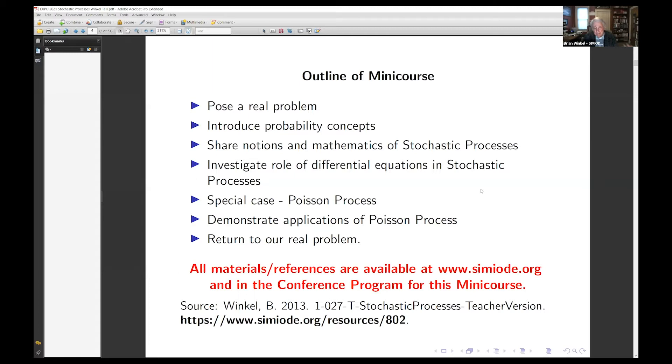Here's our process. We have a human or a machine processor. It has an hourly cost to operate it, depending upon how fast and how capable the worker is. And we're going to make money from everybody that comes through there. The customer could be a human or a machine that's needing service. There's a finite line. So people coming in and finding the line all booked up are going to go off to somewhere with their business.